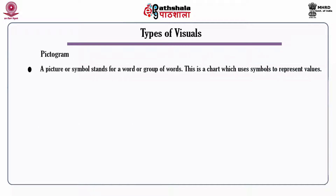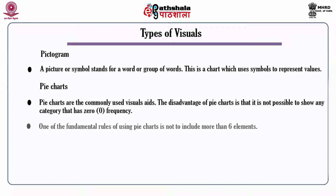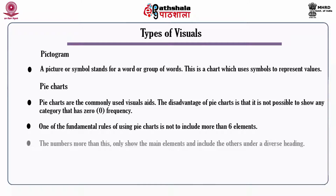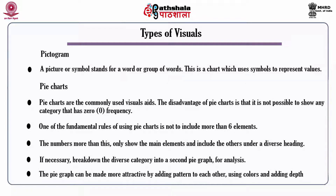Pictogram: a picture or symbol stands for a word or group of words — this is a chart which uses symbols to represent values. Pie charts are commonly used visual aids. The disadvantage of pie charts is that it is not possible to show any category with zero frequency. One fundamental rule is not to include more than six elements. Numbers greater than this should show only the main elements and group others under a diverse heading, breaking down that category into a second pie graph if necessary.